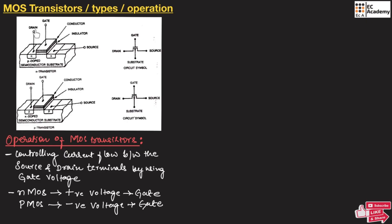The drain and source terminals are interchangeable, meaning we can identify them depending on the direction of current. Current is produced from the source terminal and flows towards the drain terminal. The gate acts as the control terminal that controls the flow of current.